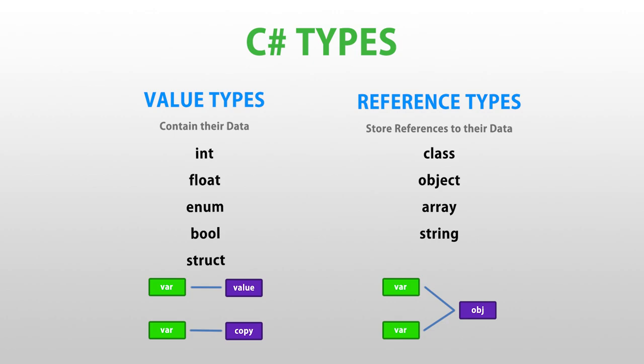Another difference is reference types can be null, whereas value types cannot. For example, if you have an enum for your weapon types and the player doesn't have any weapon, then you cannot set it to null.